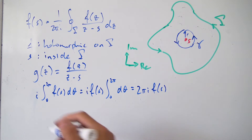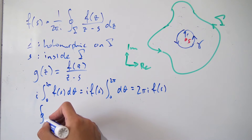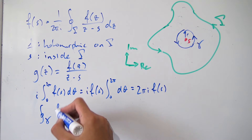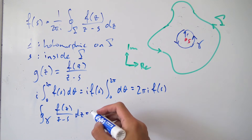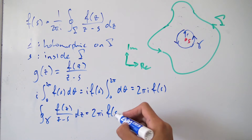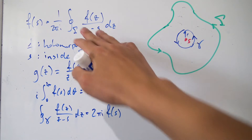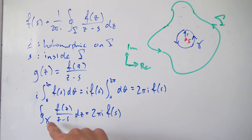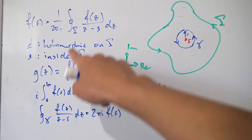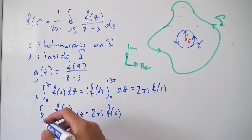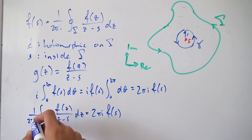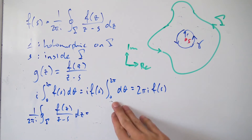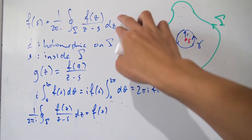We've just shown that the contour integral over gamma of f(z) over (z minus s) equals 2π·i·f(s). Since the integral along little gamma is the same as the integral along big gamma, we can replace little gamma with big gamma. The final step is to divide both sides by 2π·i, giving us f(s) equals the contour integral over gamma, which is exactly Cauchy's integral formula.